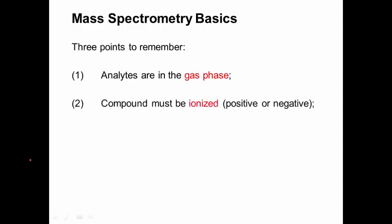The second thing is that the compounds must be ionized. In other words, they must carry a positive or negative charge. And this has to do with the way that the mass spectrometer can actually move these analytes. If they're neutral, there's no way to use a magnetic or electric field to carry them from one place to the next.